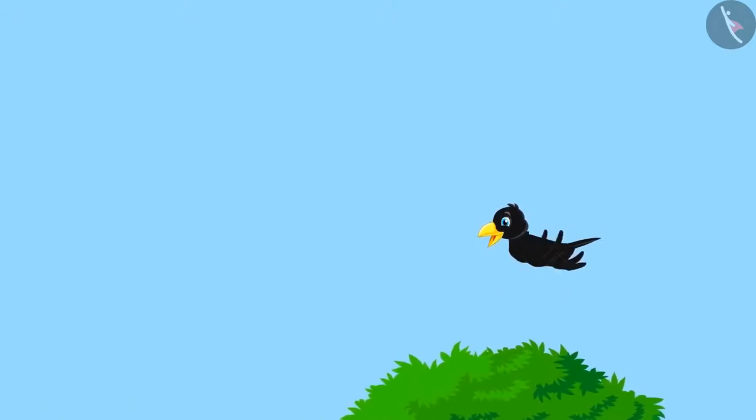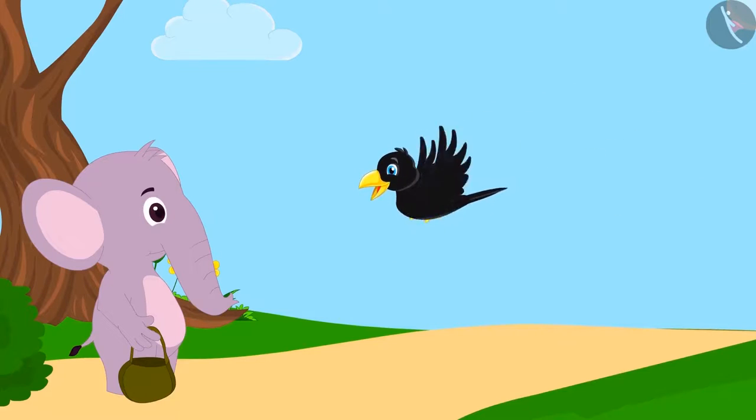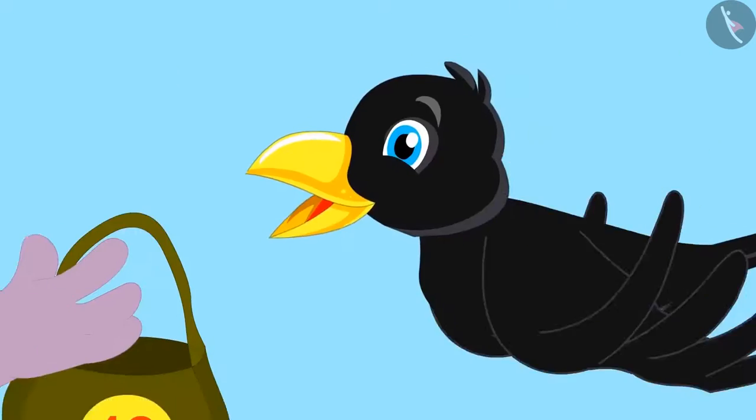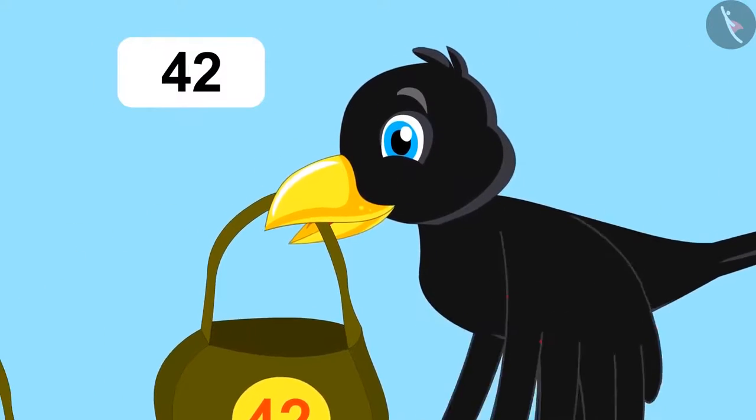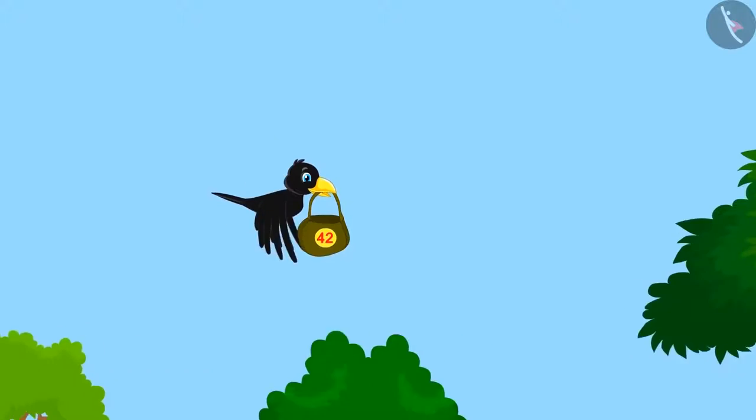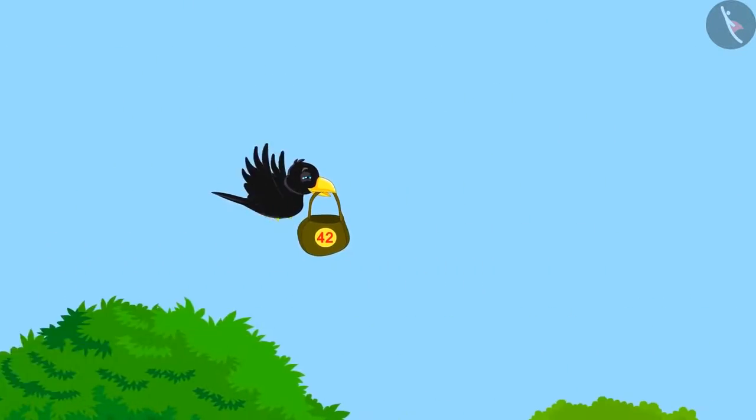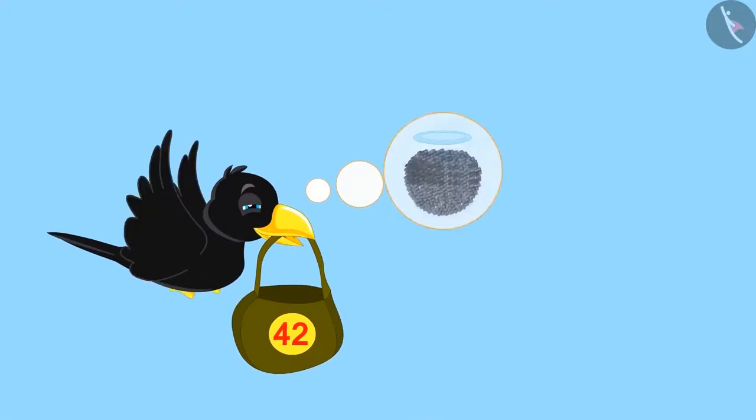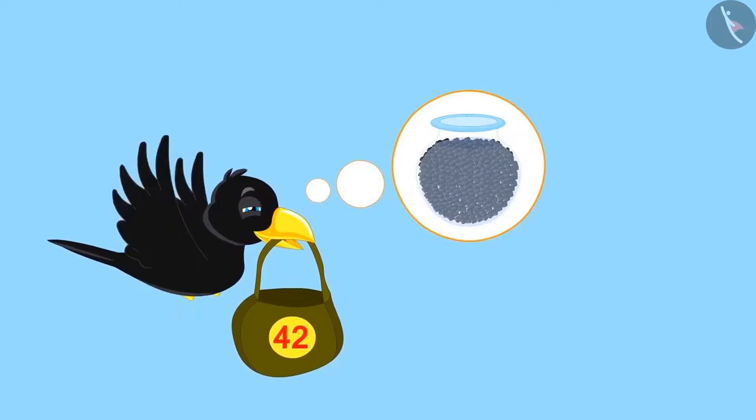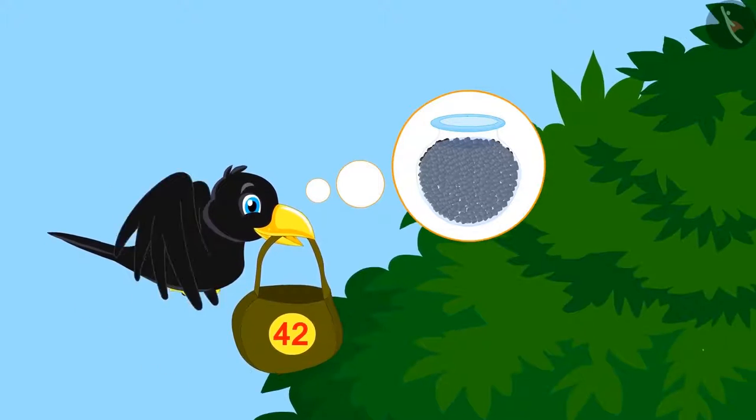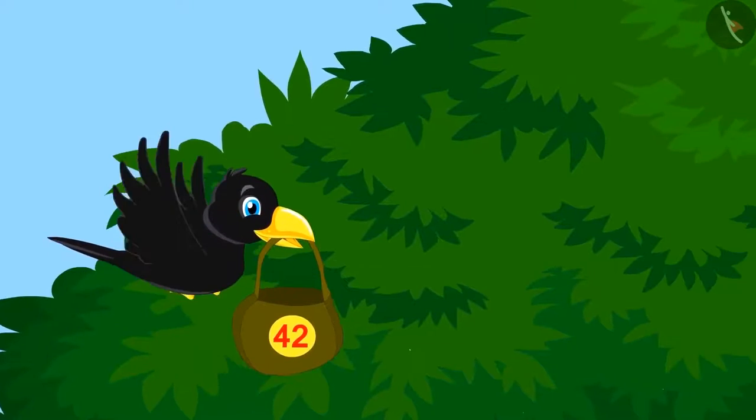This time, he went to his friend Appu Elephant. Appu is very strong. He gave altogether 42 stones to the crow. The crow was very happy and flew towards the pitcher. He was wondering if he now had enough stones. Come on, let us find out how many stones he now has in total.